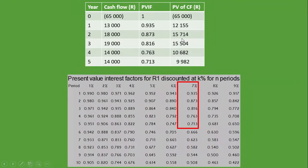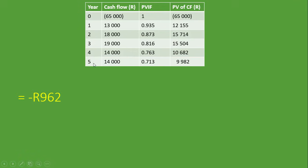Now we calculate the net present value. Once we have all the present values of cash flows, we simply add them all up — from minus 65,000 all the way to 9,982 rand. This gives us minus 962 rand. Since it is negative, we will not invest in the project because we would be making a loss of 962 rand.